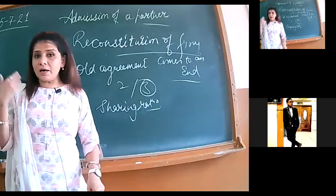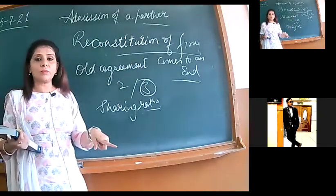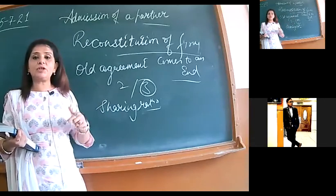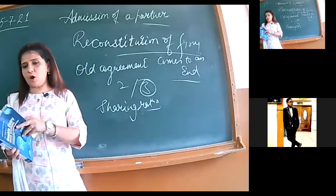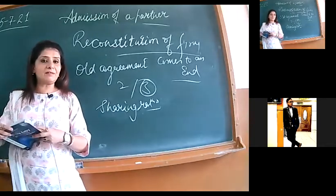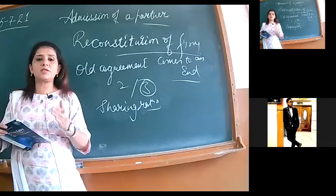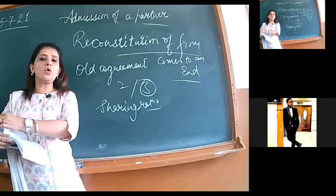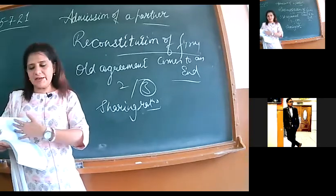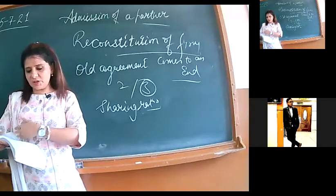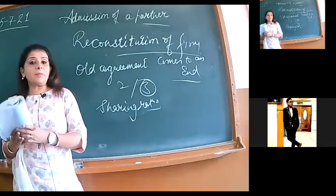So in that case, your old agreement comes to an end. Admission is also one of the cases of a reconstitution of firm. When your old partnership deed comes to an end, you prepare a new partnership deed. That is the case of reconstitution of firm. So now we have to see the sequence from your book. I am telling you fourth chapter we are leaving in between. So after the valuation of goodwill, fourth chapter is change in profit-sharing ratio. That we will do afterwards. Directly, I am picking the very important chapter from board point of view, that is admission of a partner.